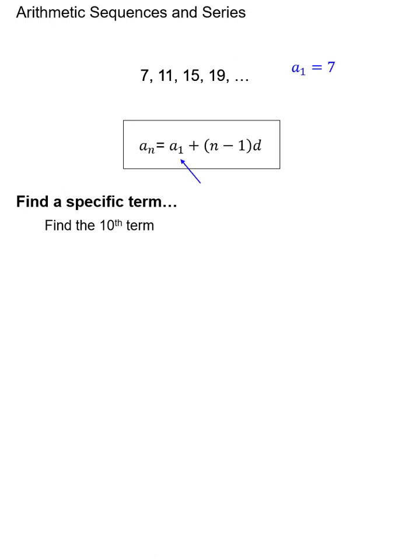a₁ refers to the first term which in this problem is 7. d refers to the common difference. You'll notice by looking at the sequence the terms are going up by 4, or d equals 4.